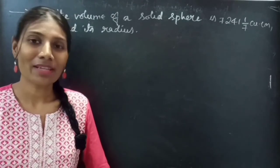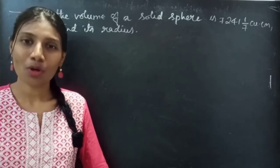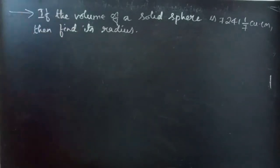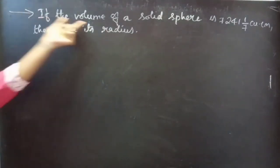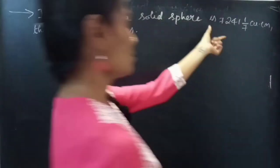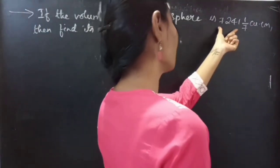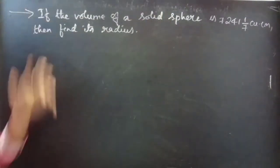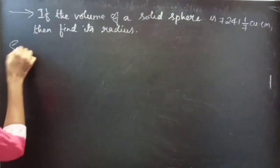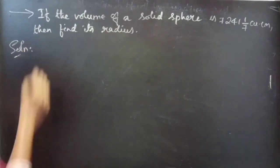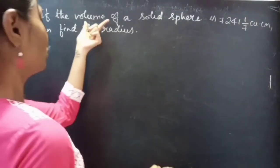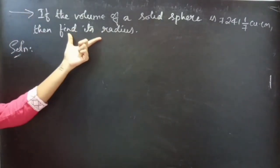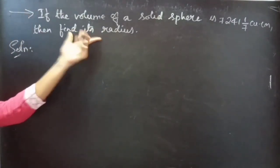Hello everyone, this is Jekatna here. In this video we are going to see a problem from mensuration. The problem: if the volume of a solid sphere is 7241 and 1/7 cubic centimeters, then find its radius. We are given the volume of a solid sphere and we are asked to find its radius.